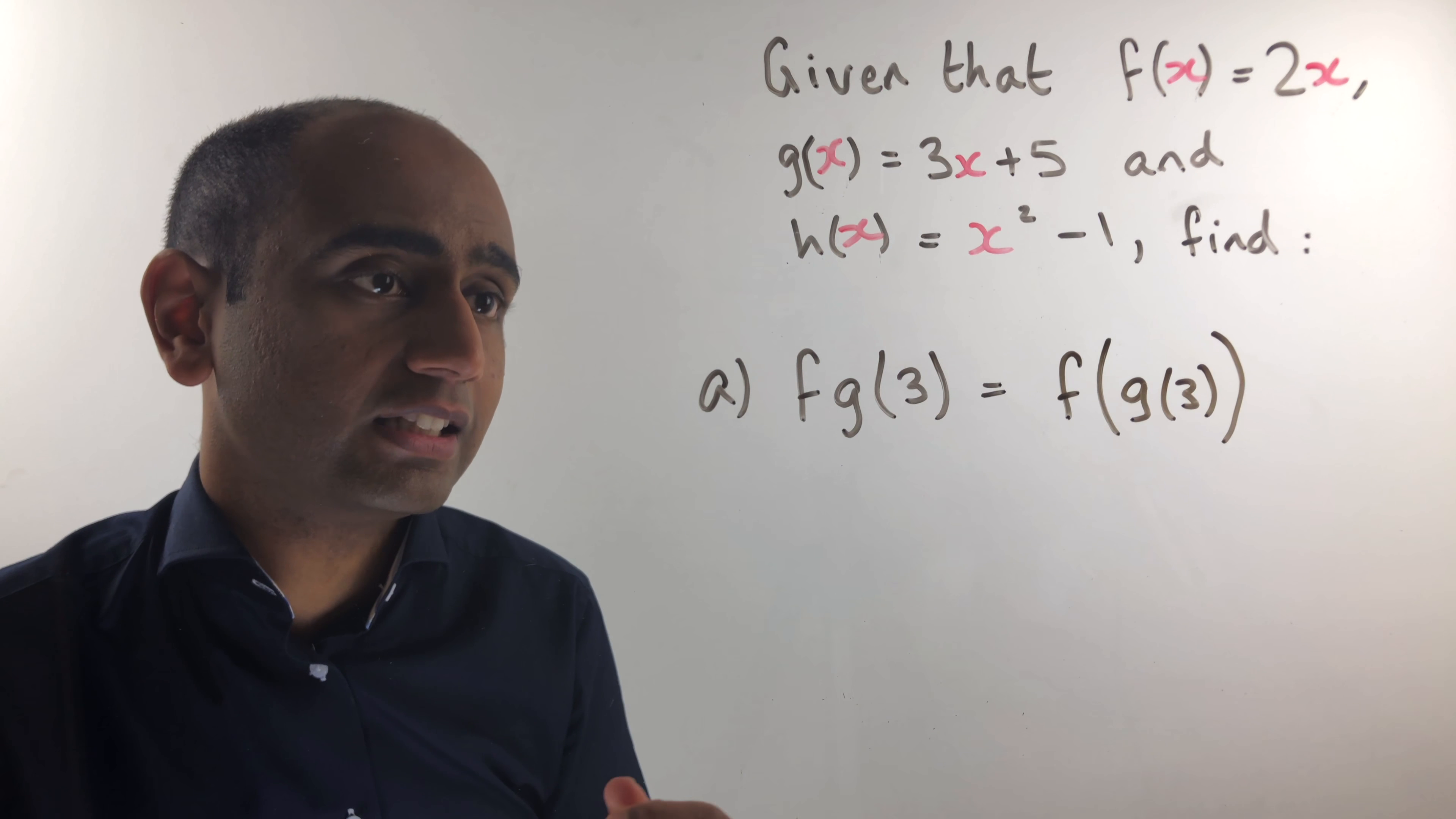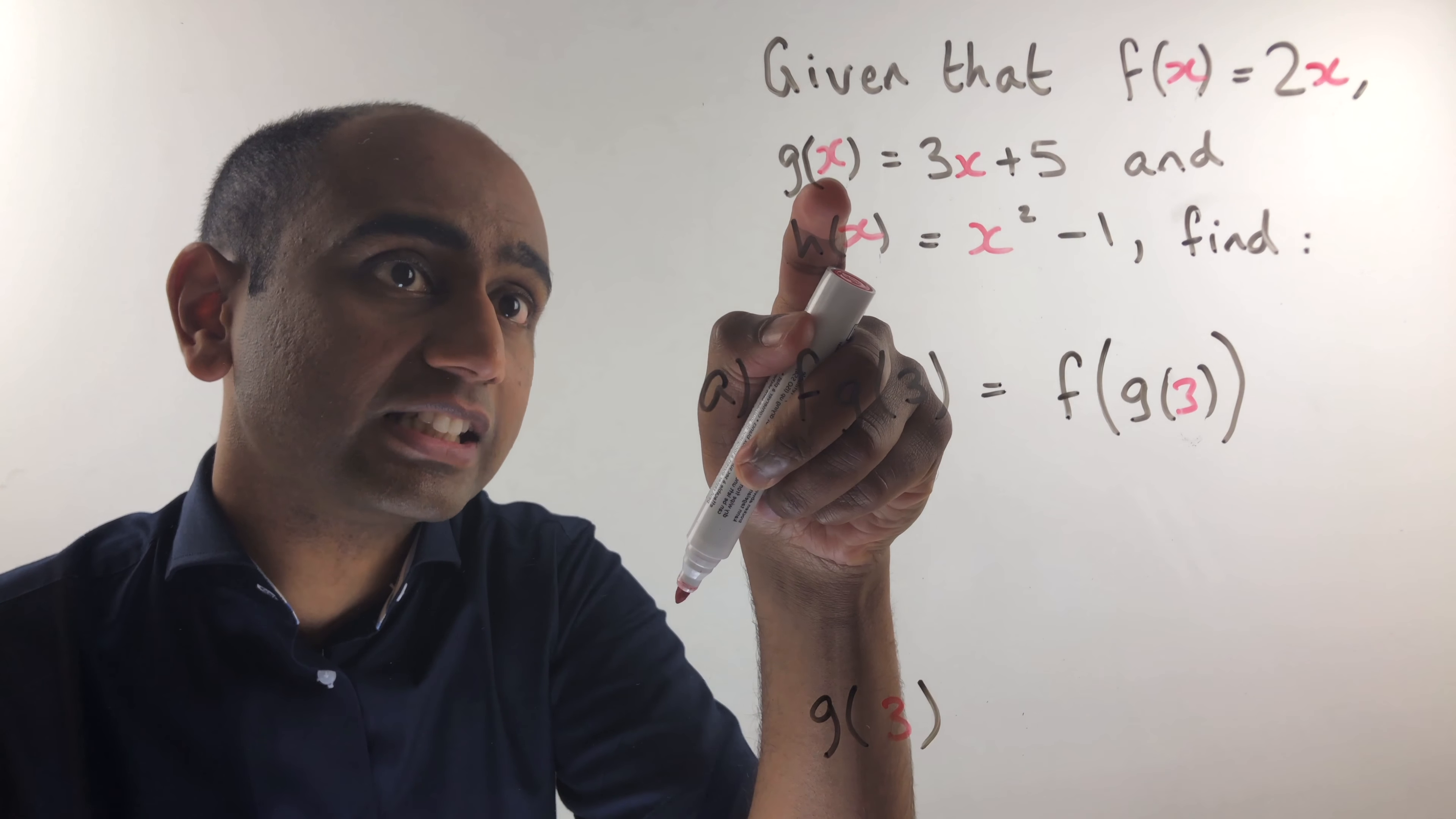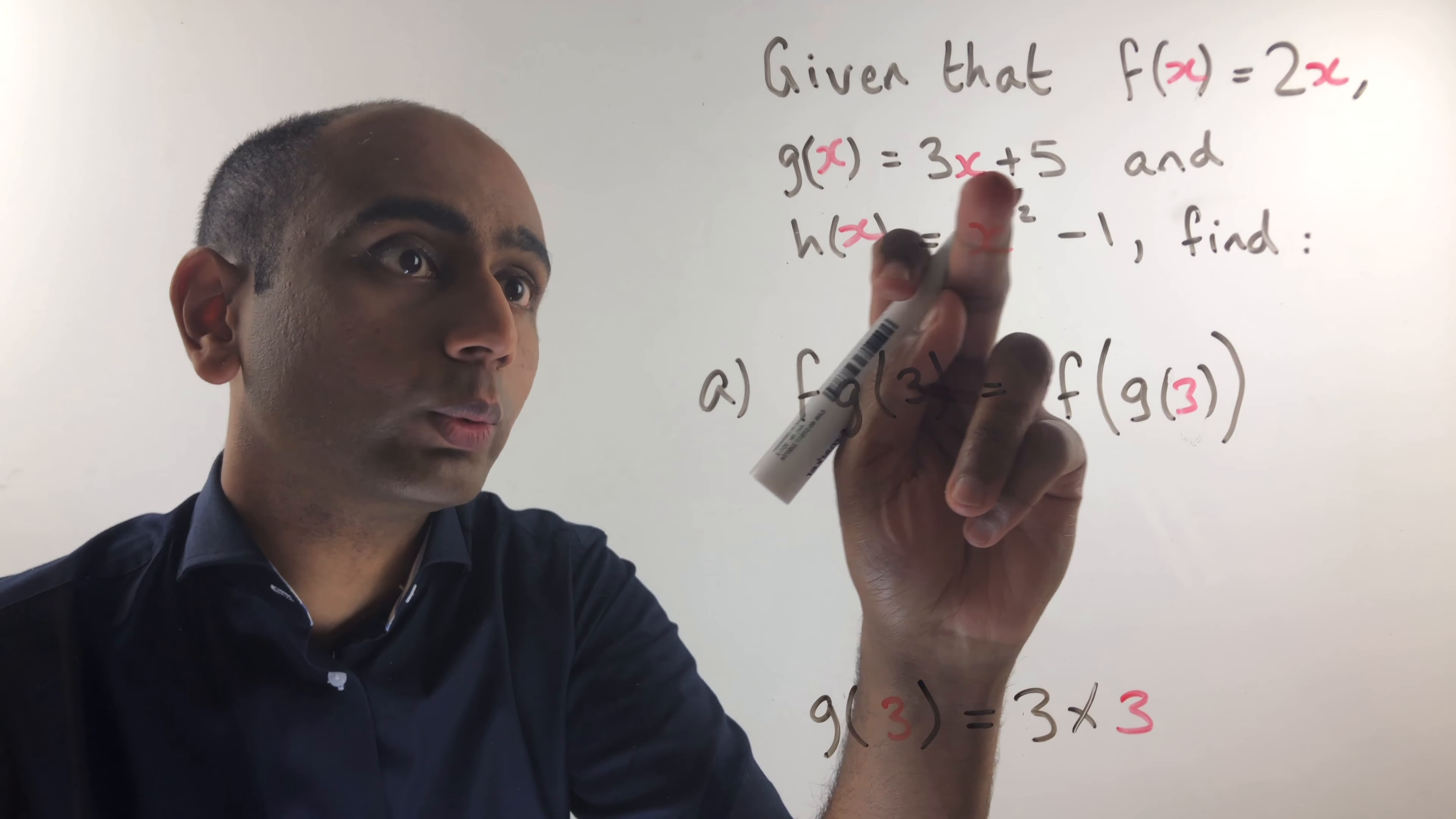So let's take this in steps. First of all let's just work out what g of 3 is. So down here I'm going to do a bit of working g of 3. To do that I'm just going to substitute the 3 in place of the x here. So g of x takes 3 times the input that's x. So in this case we're going to take 3 times this input 3 times 3.